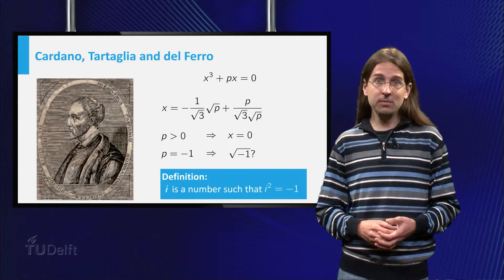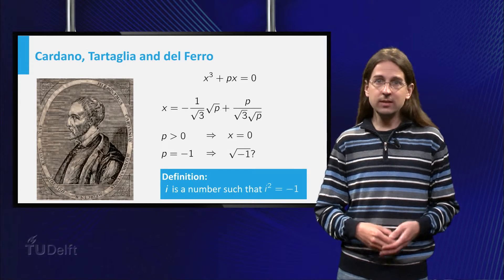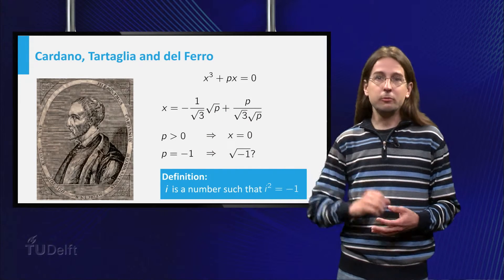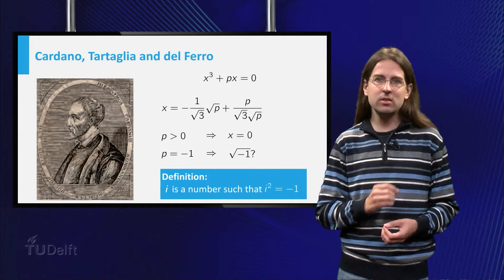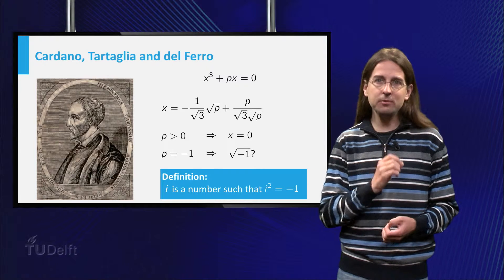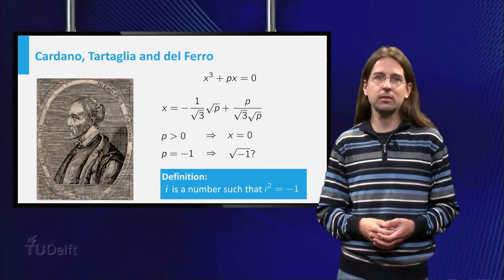When you first encounter them, these complex numbers seem really strange. Indeed Cardano, who first published this formula and discovered complex numbers, spent many pages considering many different cases, just to avoid using square roots of negative numbers.